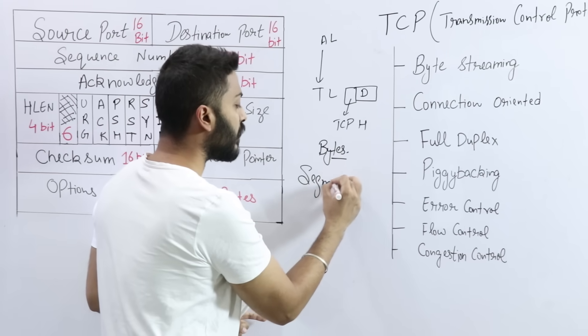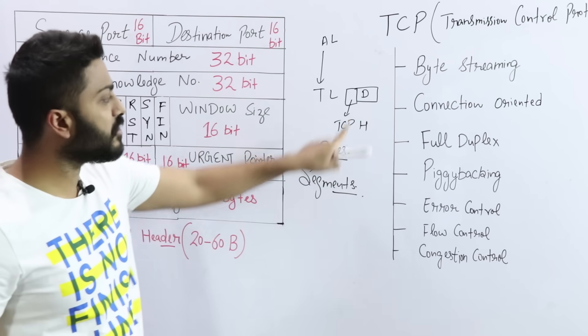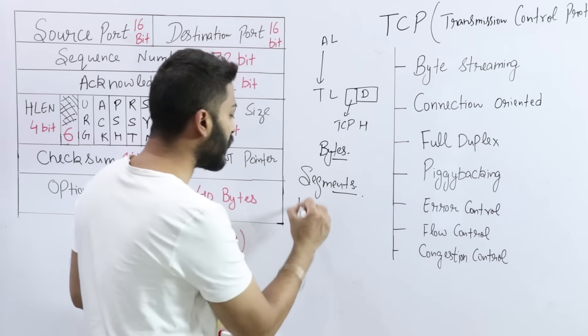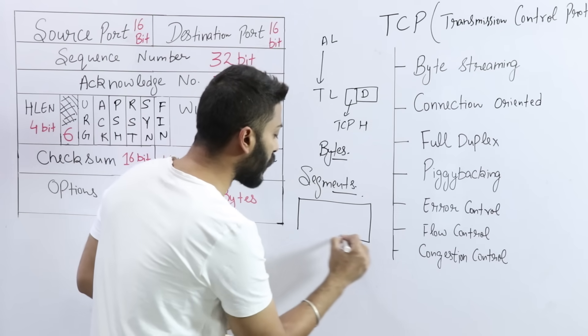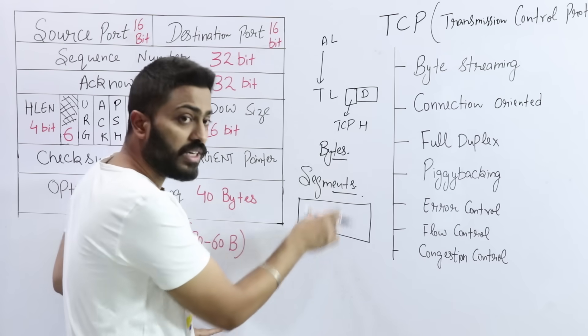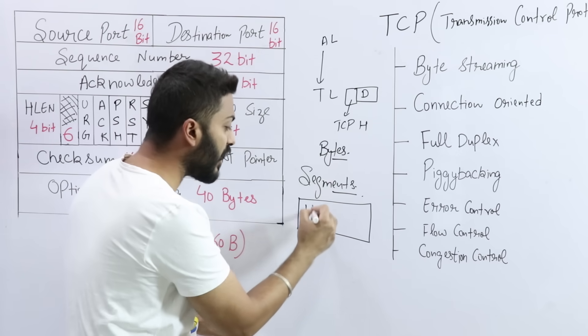This is a very important point because here TCP first functionality is segmentation. Segmentation means whenever the data comes from the application layer,